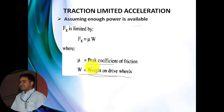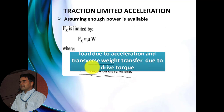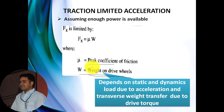Now, W in the traction limited acceleration depends on the static and dynamic load due to acceleration, and the transverse weight shift due to drive torque. The static and dynamic load due to acceleration we have already seen during the discussion of dynamic axle load in my previous video. Whenever we need to calculate this static and dynamic load due to acceleration, we can adapt the expression from the previous theories.